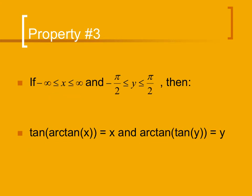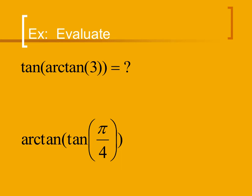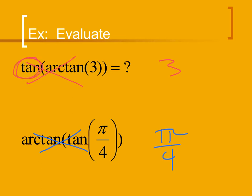The same applies to the arc tangent: the tangent of the arc tangent of x cancels to be just x, and the arc tangent of the tangent of y is just y, as long as y is between negative pi over 2 and positive pi over 2. As a shortcut: if the outside function is a regular trig function, your answer is going to be a number. If the outside function is an arc function, your answer is going to be an angle. For example, the tangent of the arc tangent of 3 gives simply 3, and the arc tangent of the tangent of pi over 4 gives pi over 4.